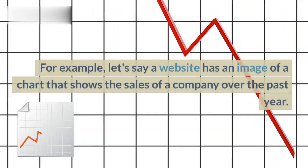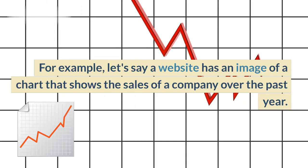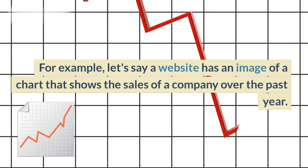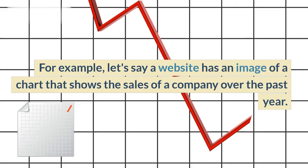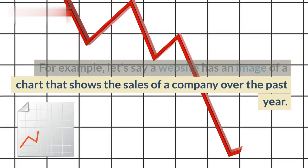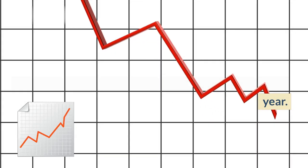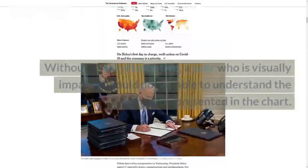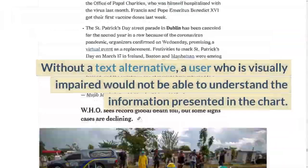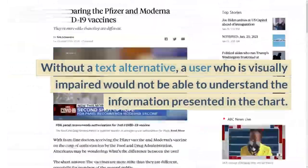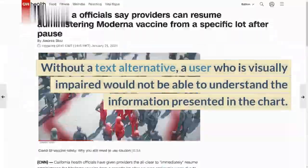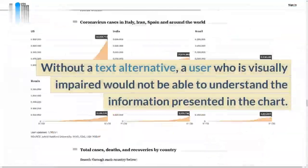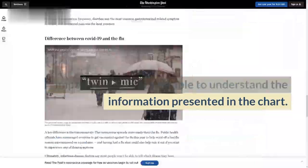For example, let's say a website has an image of a chart that shows the sales of a company over the past year. Without a text alternative, a user who is visually impaired would not be able to understand the information presented in the chart.